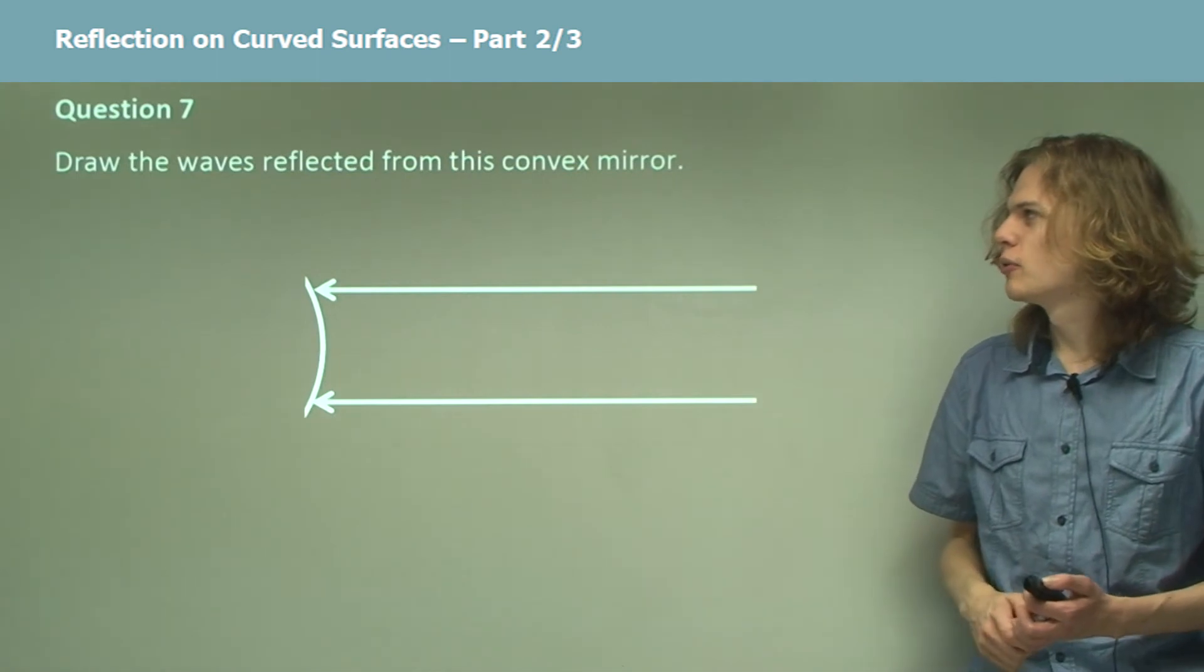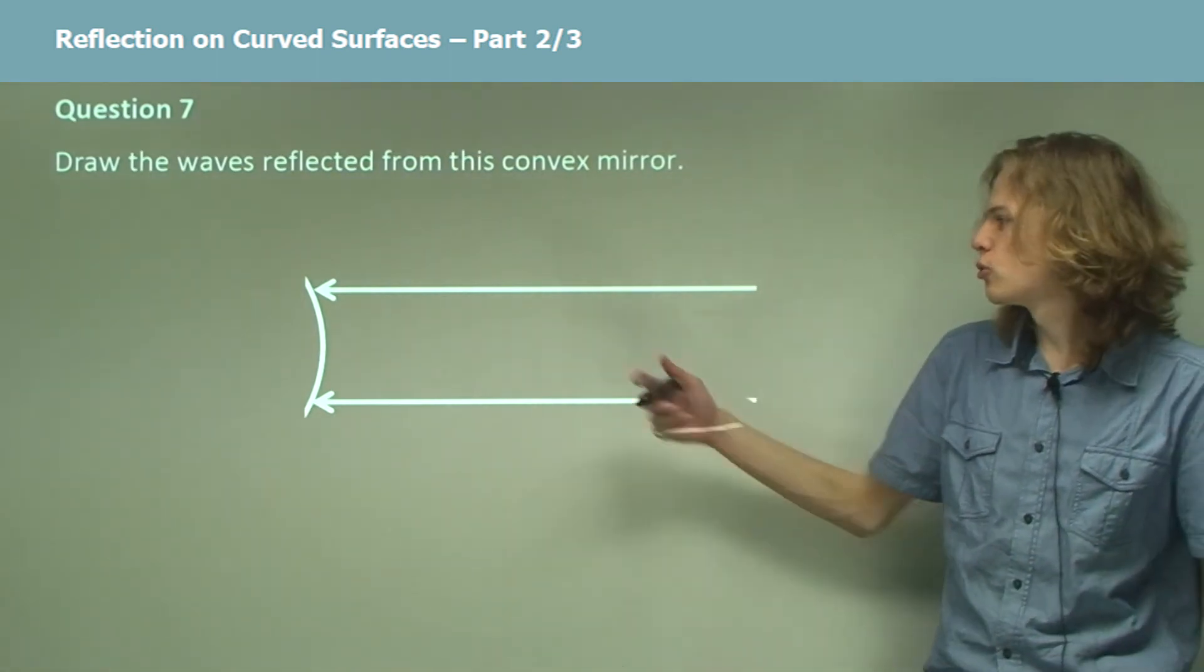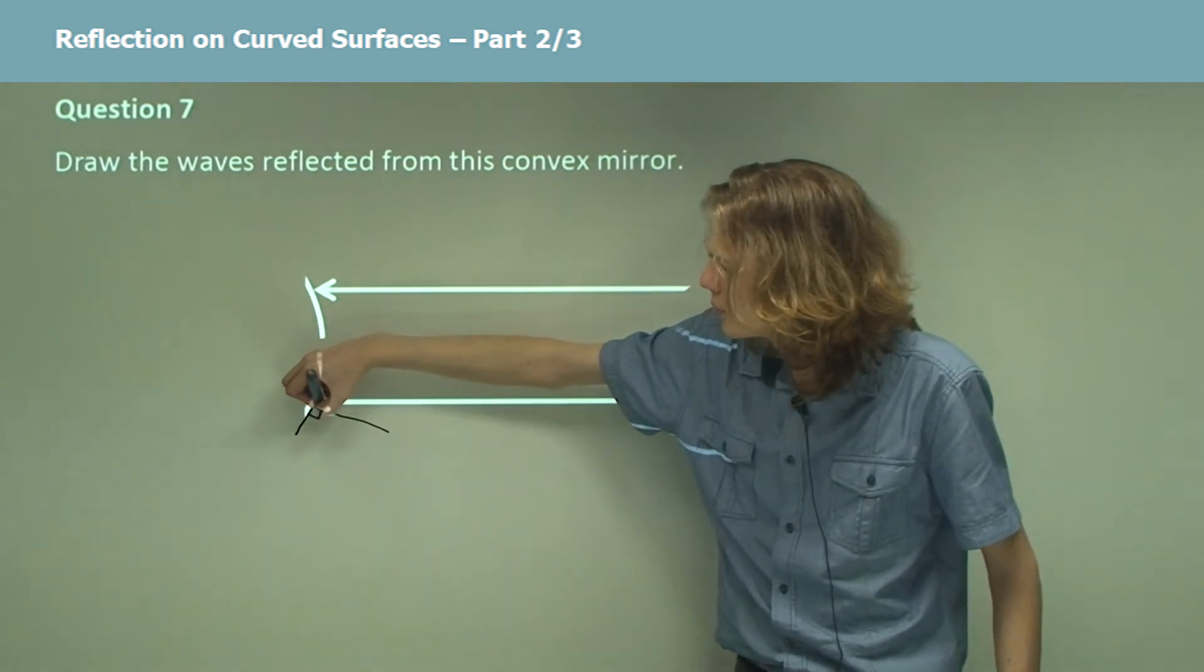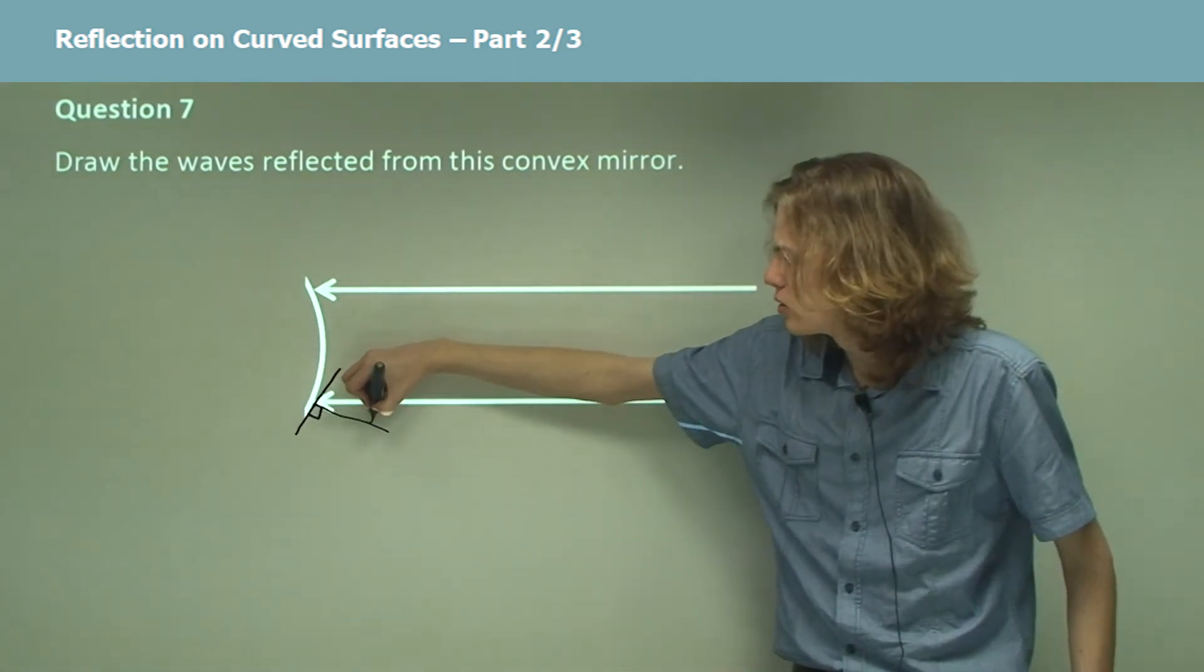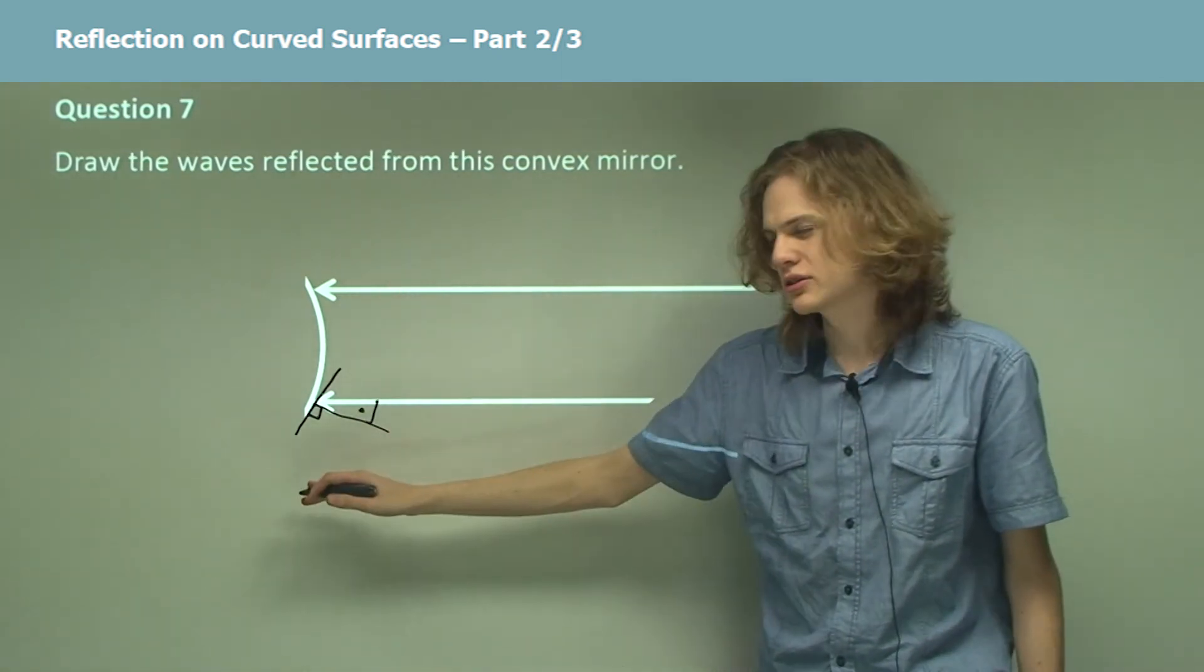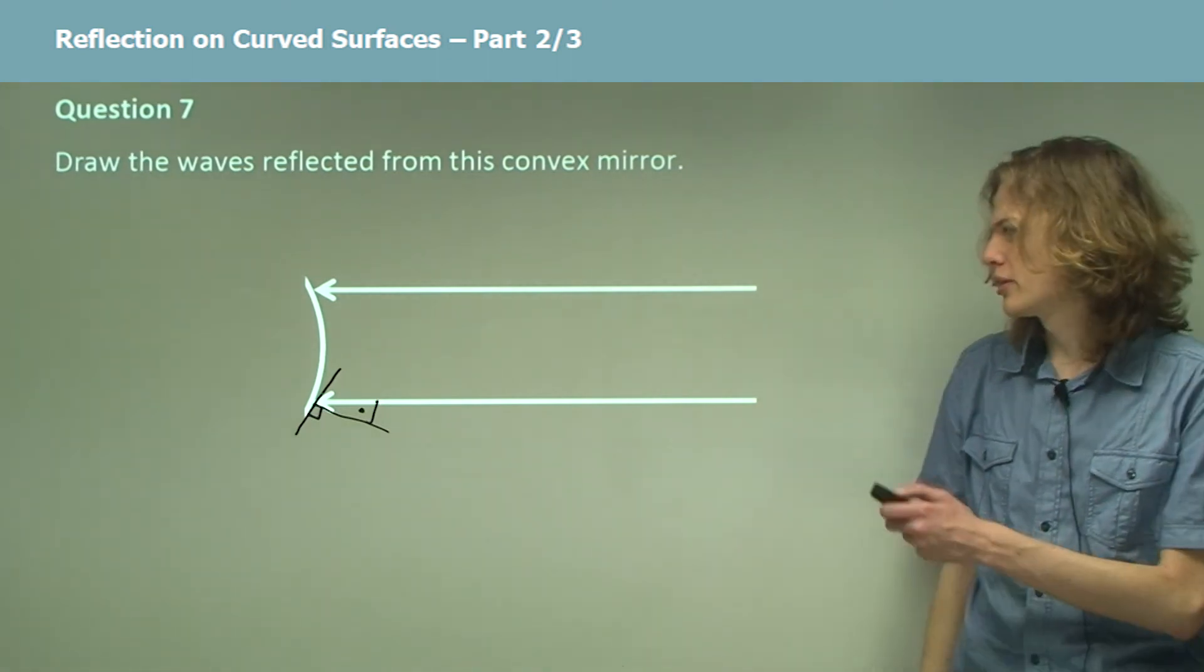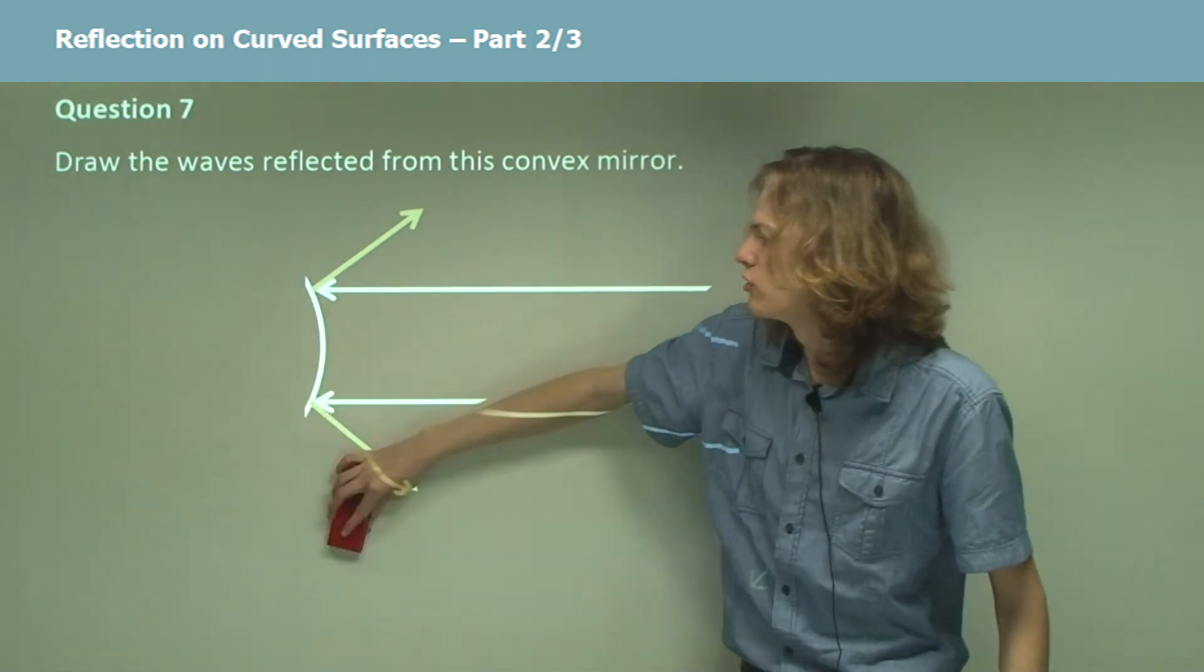Draw the waves reflected from this convex mirror. In this case, we can draw a normal to the surface which is perpendicular to the surface at the point where the light rays hit it. The angle of incidence over here will be equal to the angle of reflection from the reflected wave. So once we draw our reflected wave, it'll look something like this. We can see that the waves are diverging from each other.